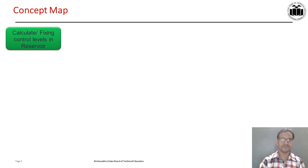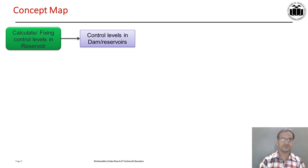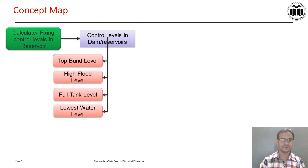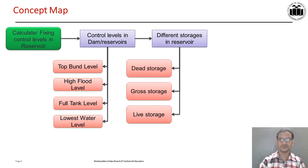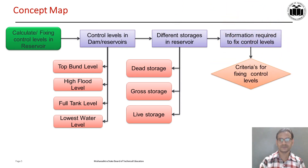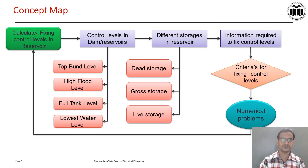Let us start with the concept map. Our aim is to calculate or fix control levels in a reservoir. To achieve this aim, the first new concept is control levels in reservoirs — these are the levels. Another concept is different storages in reservoir — these are the storages. Then we will see the information required to fix the control levels, then the criteria for fixing the various levels, and after this we will solve the numericals to achieve our objective of calculating or fixing the various levels in the dam.